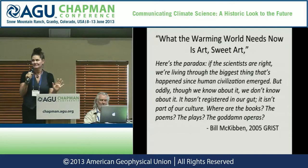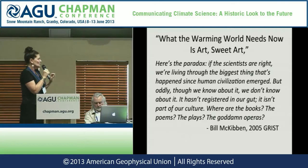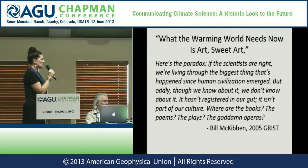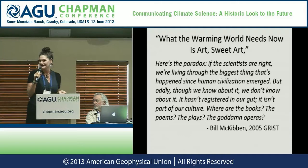In 2005, Bill McKibben wrote an article in Grist: 'What the Warming World Needs Now Is Art, Sweet Art.' He wrote: 'Here's the paradox — if the scientists are right, we're living through the biggest thing that's happened since human civilization emerged. But though we know about it, we don't know about it. It hasn't registered in our gut. It isn't in our culture. Where are the books, the poems, the plays, the goddamn operas?' And so artists heard this plea and acted.